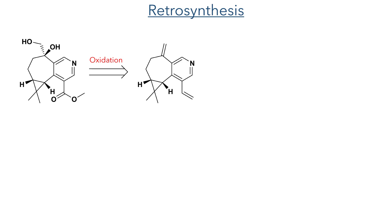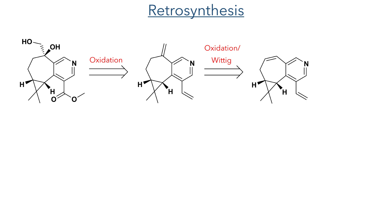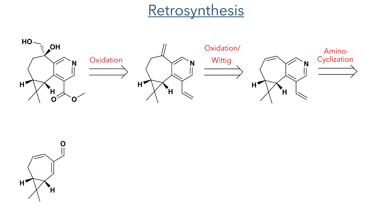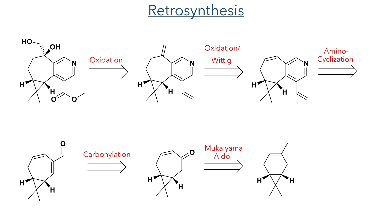So let's start by looking at the retrosynthesis. The first disconnection happens at the 1,2-diol moiety, which could be generated from the oxidation of an alkene. This exo-alkene could be generated in two steps from an oxidation of an endo-alkene followed by a Wittig reaction. This pyridine-containing intermediate would be derived from an alpha-beta unsaturated aldehyde in an amino cyclisation reaction. The aldehyde could be generated using carbonylation, and the precursor to this carbonylation could be produced using a Mukaiyama aldol reaction.